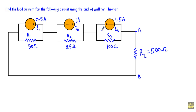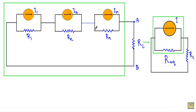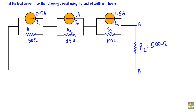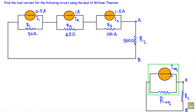The dual of Millman's theorem states that if we have this kind of circuit structure, we can reduce the circuit inside this green rectangle into a simple current source whose value will be I_equivalent in parallel with resistance R_equivalent across terminals A and B. So our reduced circuit will look like that.